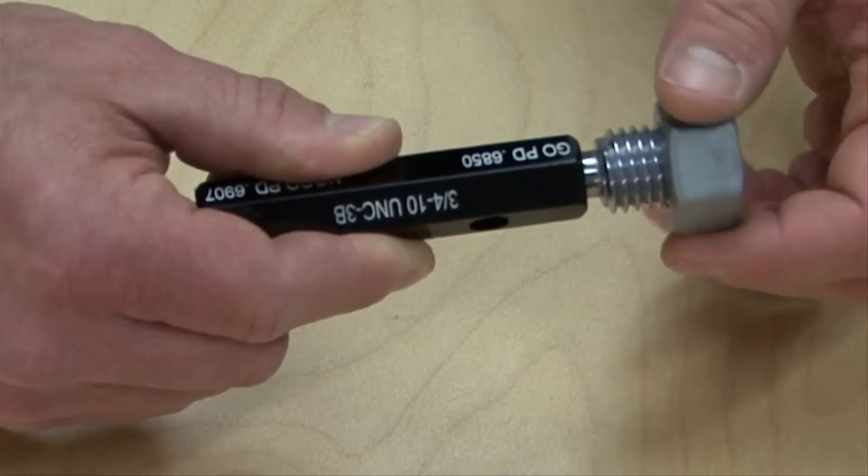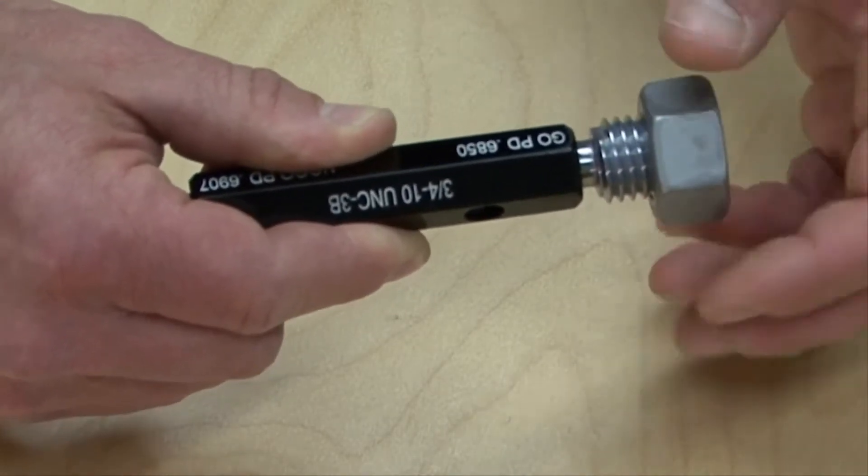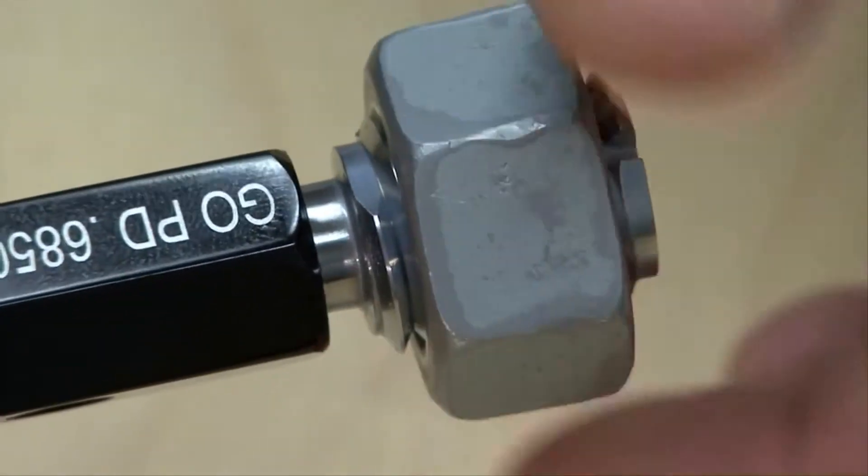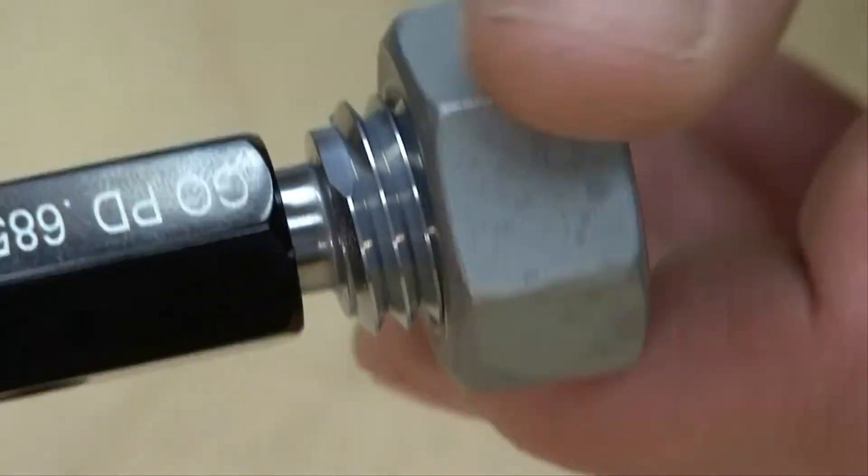There is no specification regarding torque or pounds of pressure for using thread plug gauges. Common sense should be applied based on factors of thread size, pitch, and application.